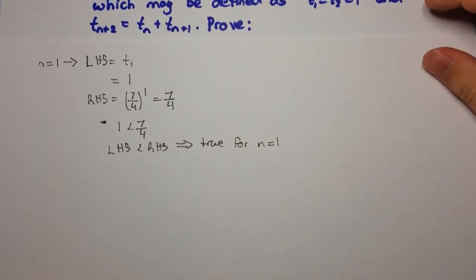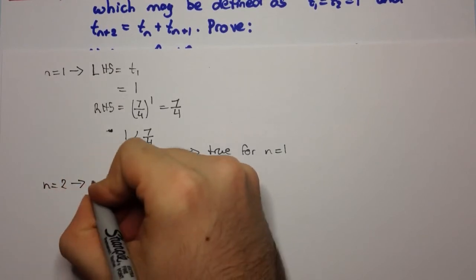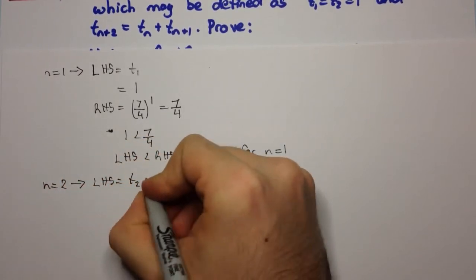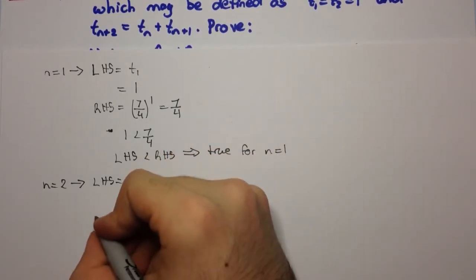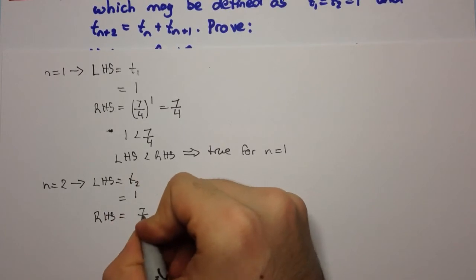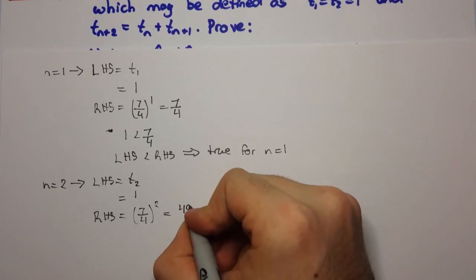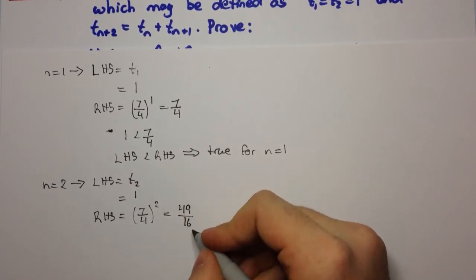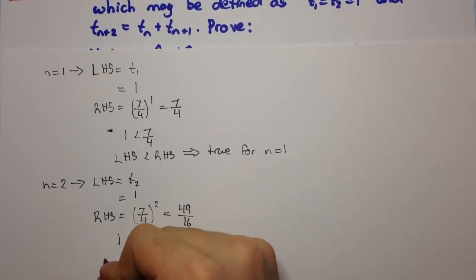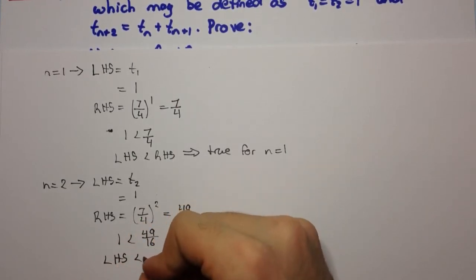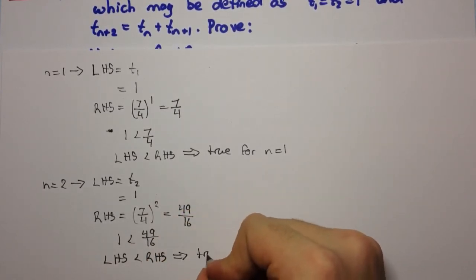For n equals 2: the left-hand side is t_2, which is 1 by definition. The right-hand side is equal to (7/4)^2, which is 49/16. This is clearly greater than 1, so 1 is less than 49/16. The left-hand side is less than the right-hand side, which means it's also true for n equals 2.